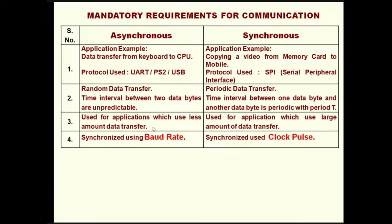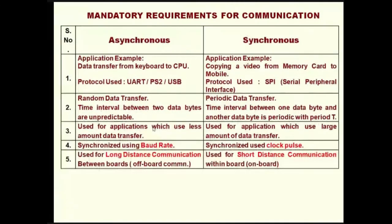Clock pulse cannot travel for long distances. If the clock pulse travels a long distance, it cannot preserve its edge. If the edge is not predictable by the receiver, communication becomes very difficult and there are many possibilities of errors. In simple terms: synchronous serial communication is suitable for on-board serial communication. If you want to communicate between two boards, clock pulse cannot travel that far, so baud rate-based synchronization is used — initially fixing the data rate and then starting communication.